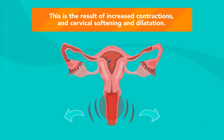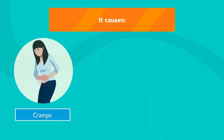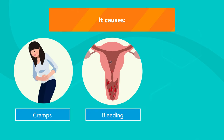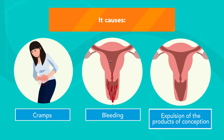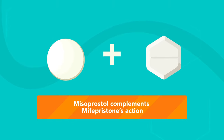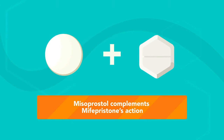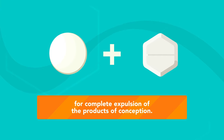This results in increased contractions and cervical softening and dilation, causing cramps, bleeding, and expulsion of the products of conception. Misoprostol complements Mifepristone's action for complete expulsion of the products of conception.